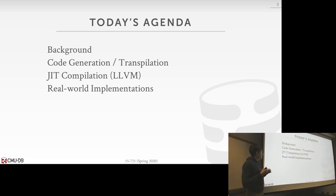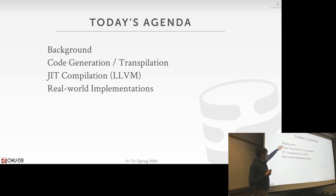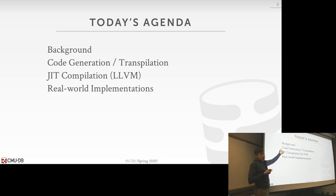We'll first talk about some background on what code generation is and why we want to do compilation. Then we'll talk about the two techniques: code generation and transpilation, basically source-to-source compilation. Then we'll talk about JIT compilation using LLVM, because that was in the Hyper paper you guys read. We'll also look at real-world techniques including Postgres and our own database system to see what the code-gen compiler looks like.